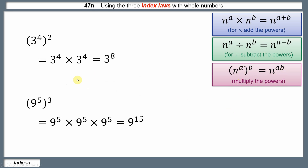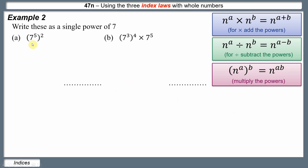Let's look at examples using this final rule. It's useful to write out what the outer power means: 7 to the power of 5, and then squared, means 7 to the power of 5 times itself. Add the powers — that's 7 to the 10. In other words, 5 and 2 are multiplied together to give 10.